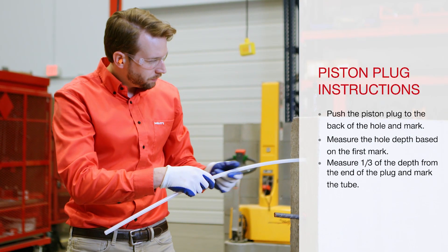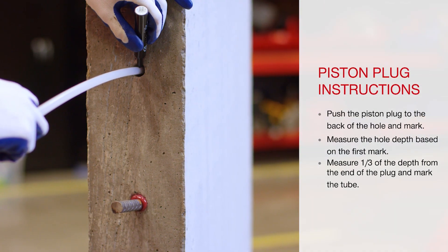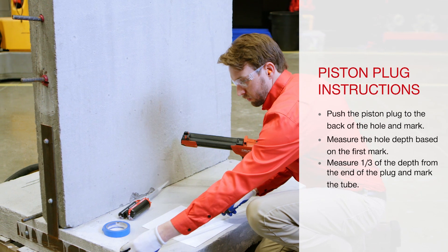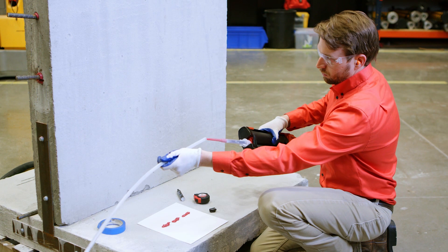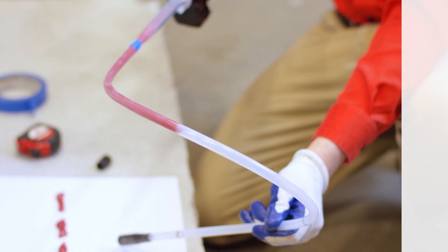With Hilti's piston plug system, filling deep embedments becomes easier. This system helps prevent improper filling and air pockets that can form from deep injections. When air pockets are present, the strength of the rebar can be compromised.